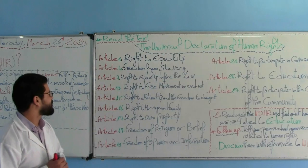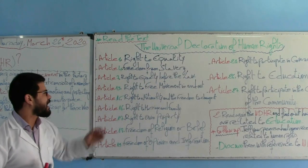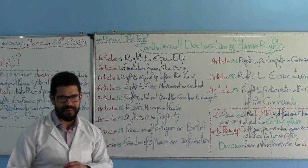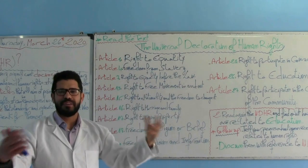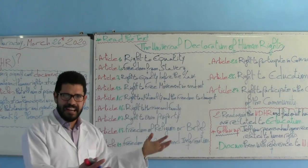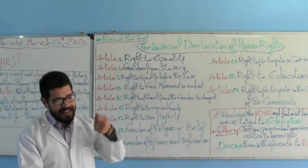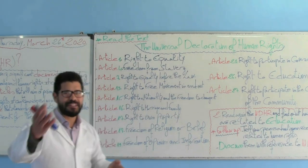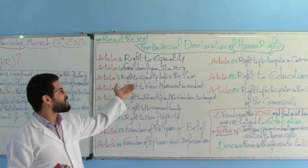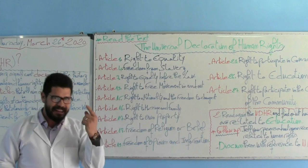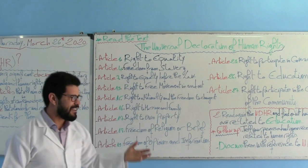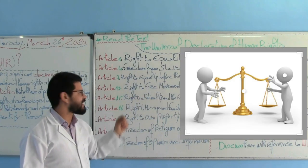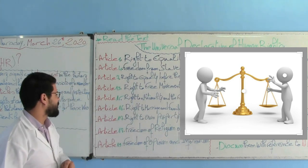Have a look at Article number seven: Right to equality before the law. As you know, all citizens are equal in front of the law and they have to abide by the law. What we need to know is that we have the right to equality even before the law. This is the picture that best matches Article number seven.